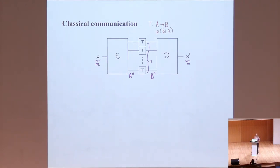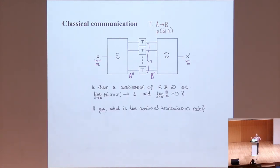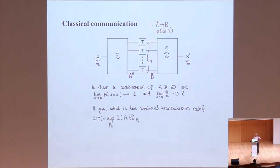There is some trade-off between the number of times you have to use the channel and the success probability. The question is: can we communicate such that the success probability approaches 1 in the limit of infinitely many transmissions, and your rate of message bits per channel use is not 0? If you can find a non-zero rate, this is a transmission rate for a specific encoding and decoding scheme, and the best possible transmission rate is the wire's capacity.